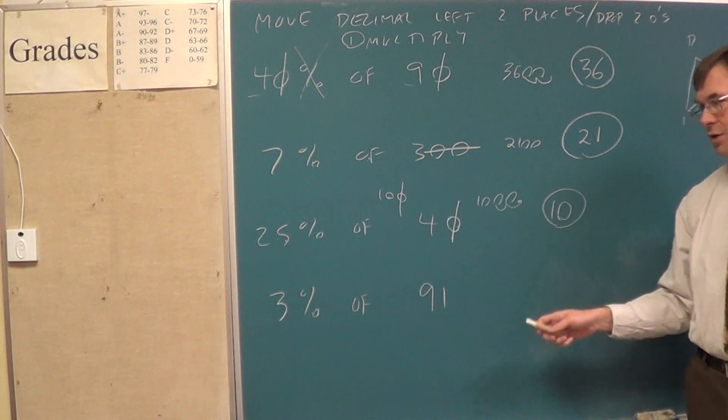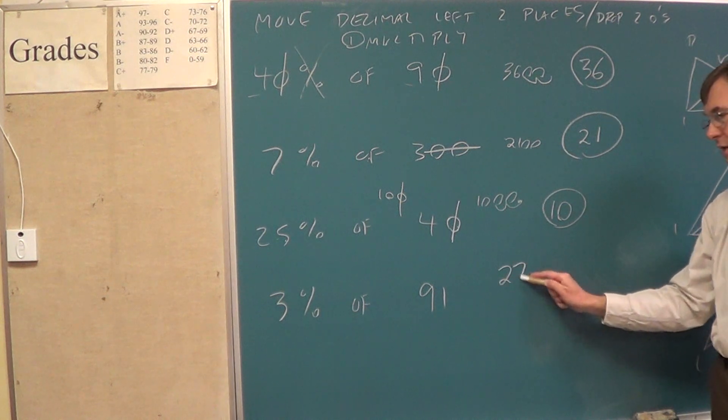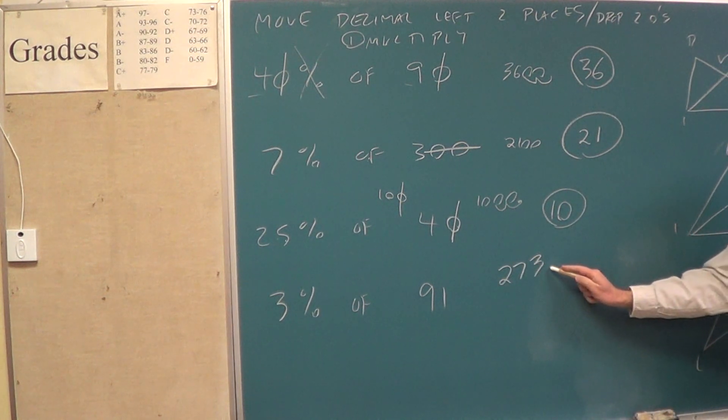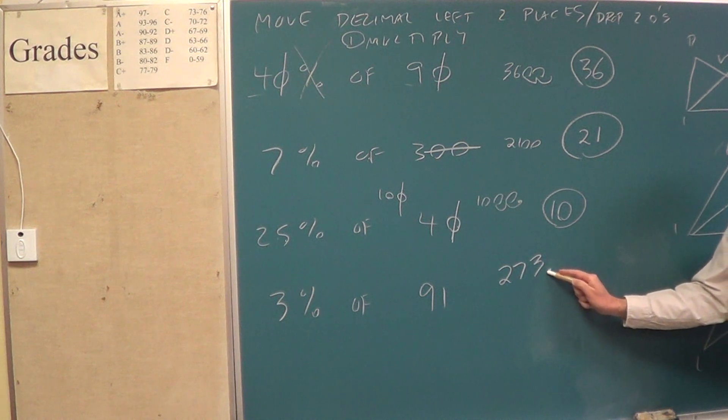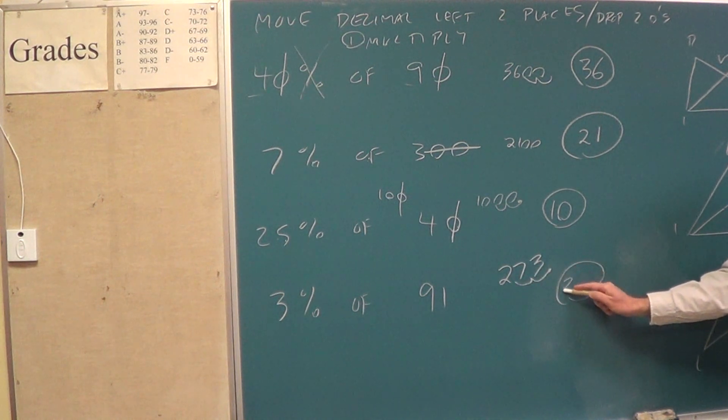That doesn't always work, though. Like on this, there are no zeros. You're just stuck. You multiply those numbers. One of those is 273. There's still no zeros, so we have to settle for there's an invisible decimal here to glide that left twice, and that makes 2.73.